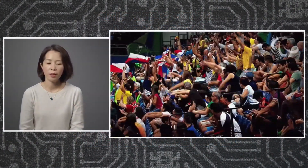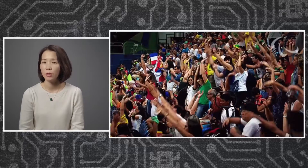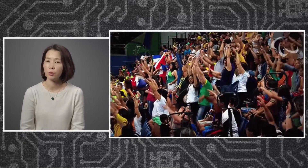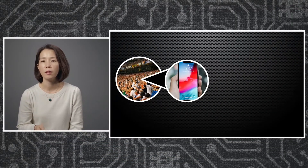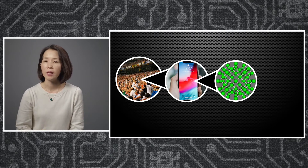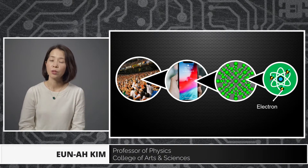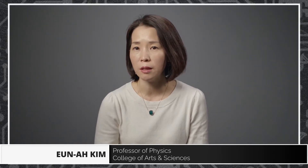This is a social phenomena that emerges when many individuals interact according to an agreed upon rule. I am a physicist who studies social phenomena, but at a much, much smaller scale. When you zoom into these people's hands and their phone, there are these electrons. And I study the social phenomena of electrons. Electrons form different communities depending on the social infrastructure, that is the material, and the environment, that is the experimental condition.